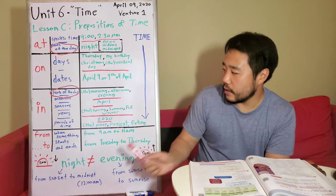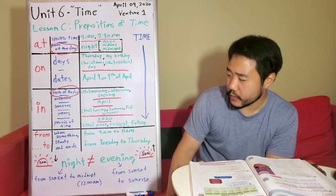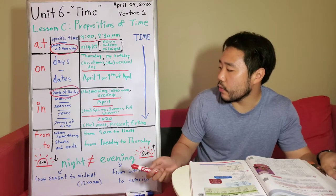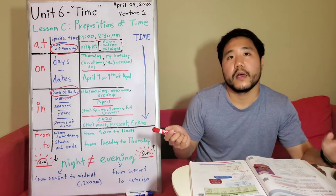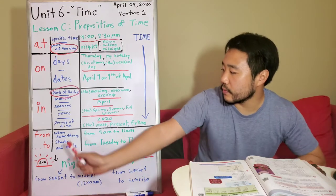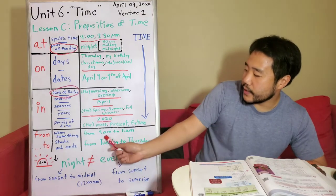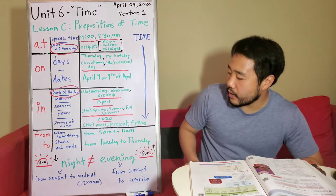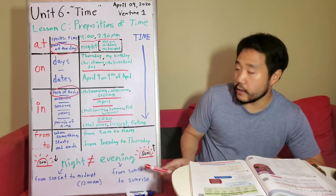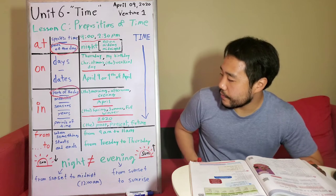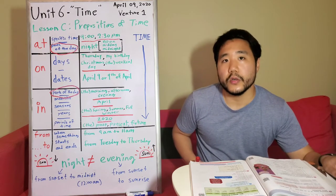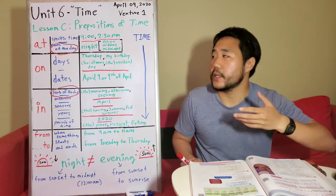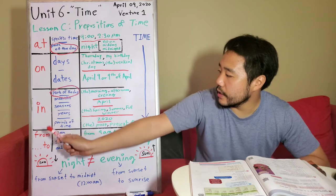Finally, we have "from...to." From/to is used to describe the time when something starts and ends. Examples are: from 9 a.m. to 11 a.m., and from Tuesday to Thursday. So those are the differences between each preposition: at, on, in, from/to.